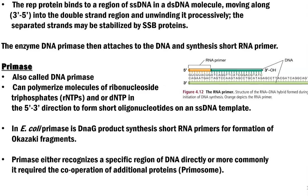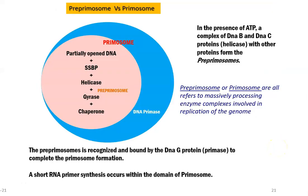Primase either recognizes a specific region of the DNA directly or, more commonly, it requires cooperation of various other enzymes and proteins. Primase can bind to a pre-primosome, which results in the formation of a primosome. This slide shows the difference between a pre-primosome and a primosome. The pre-primosome is shown in the pink circle and comprises a partially opened DNA with single strand binding protein attached, preceded by helicase unwinding the DNA into single stranded DNA molecules.